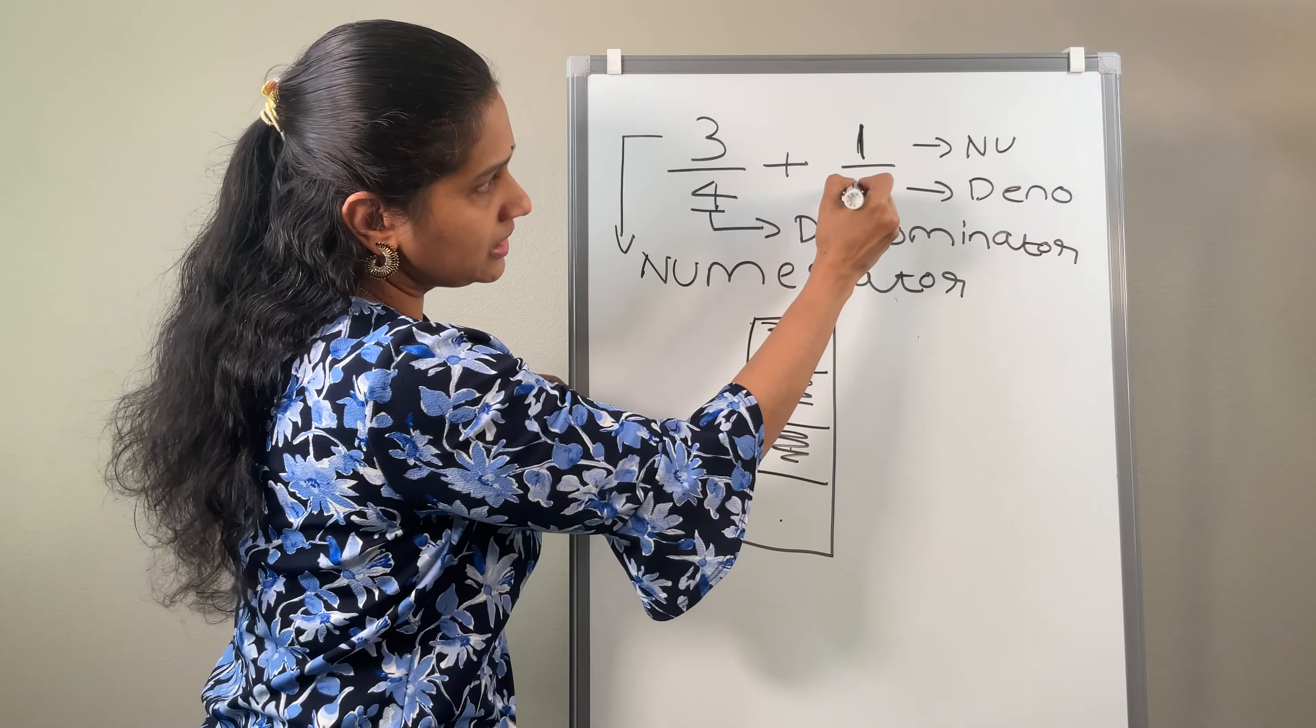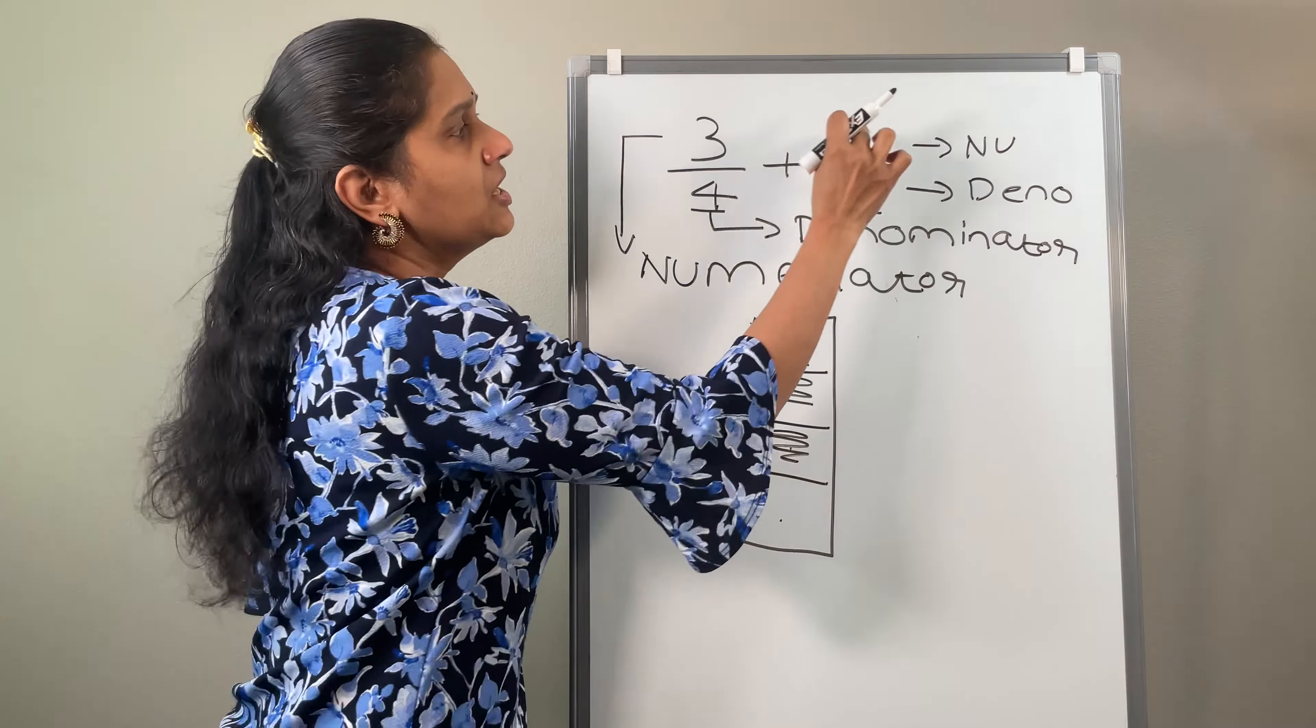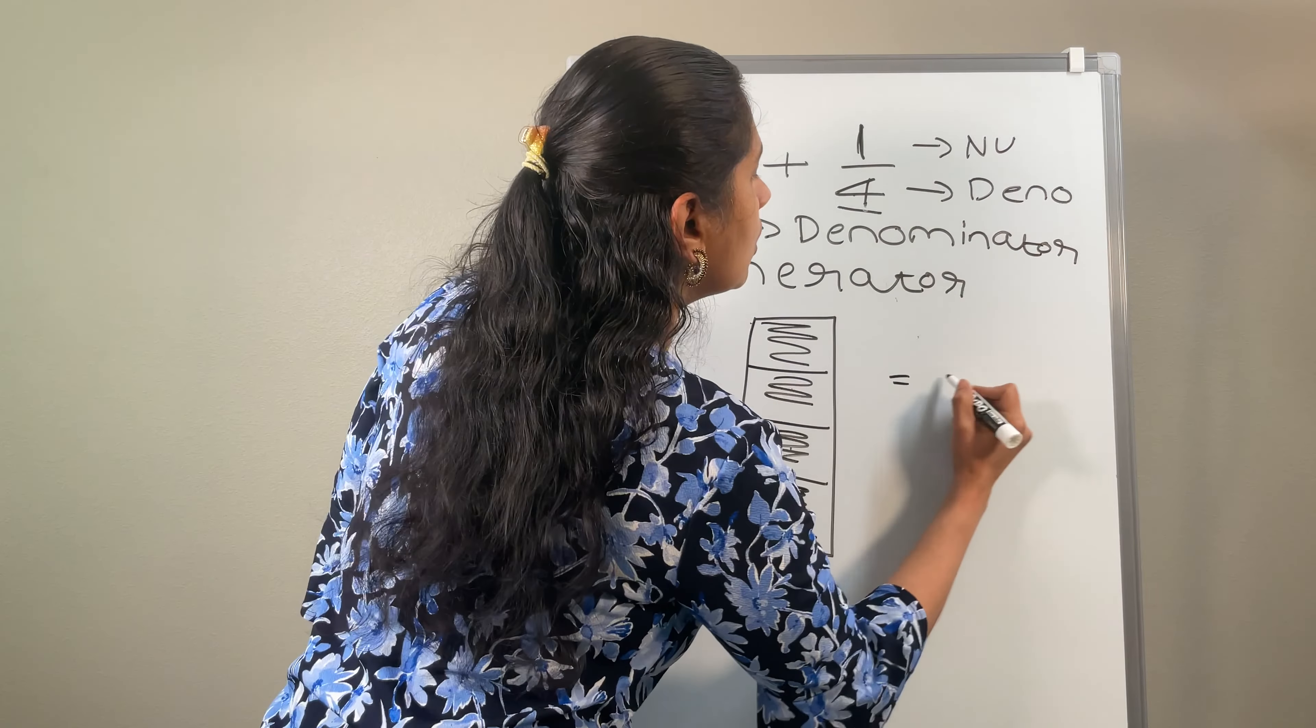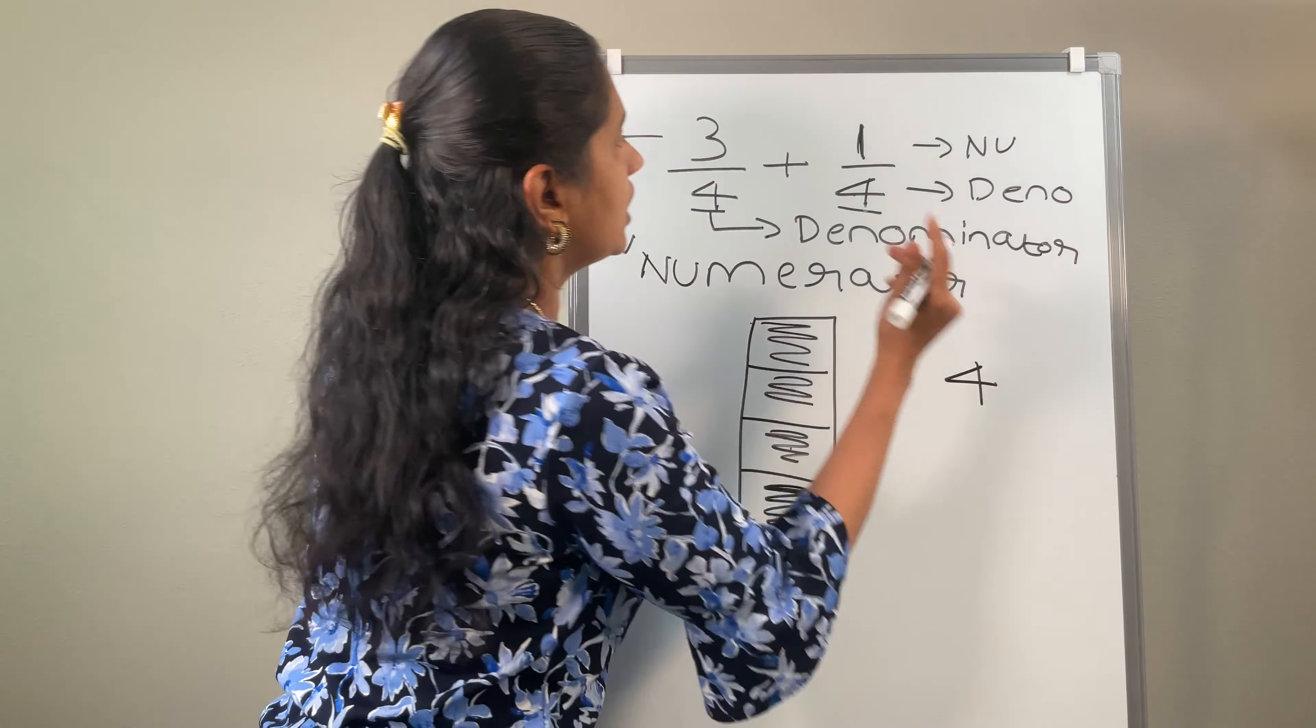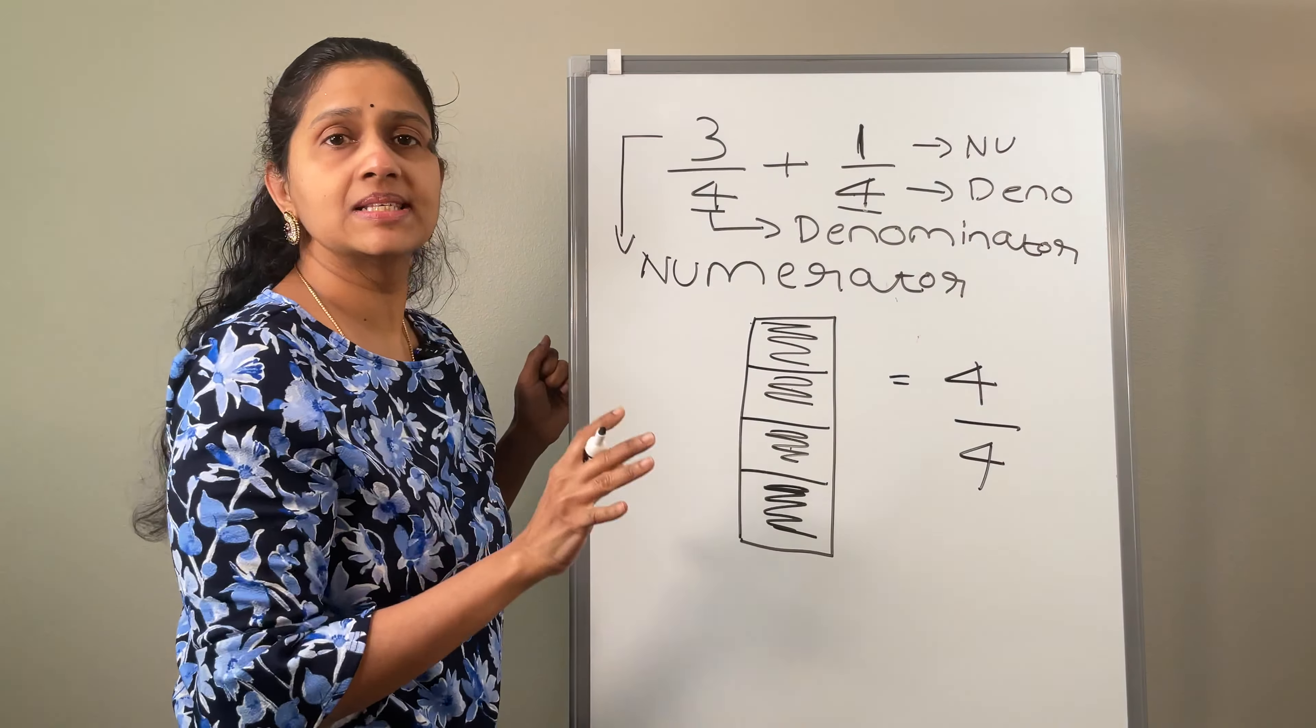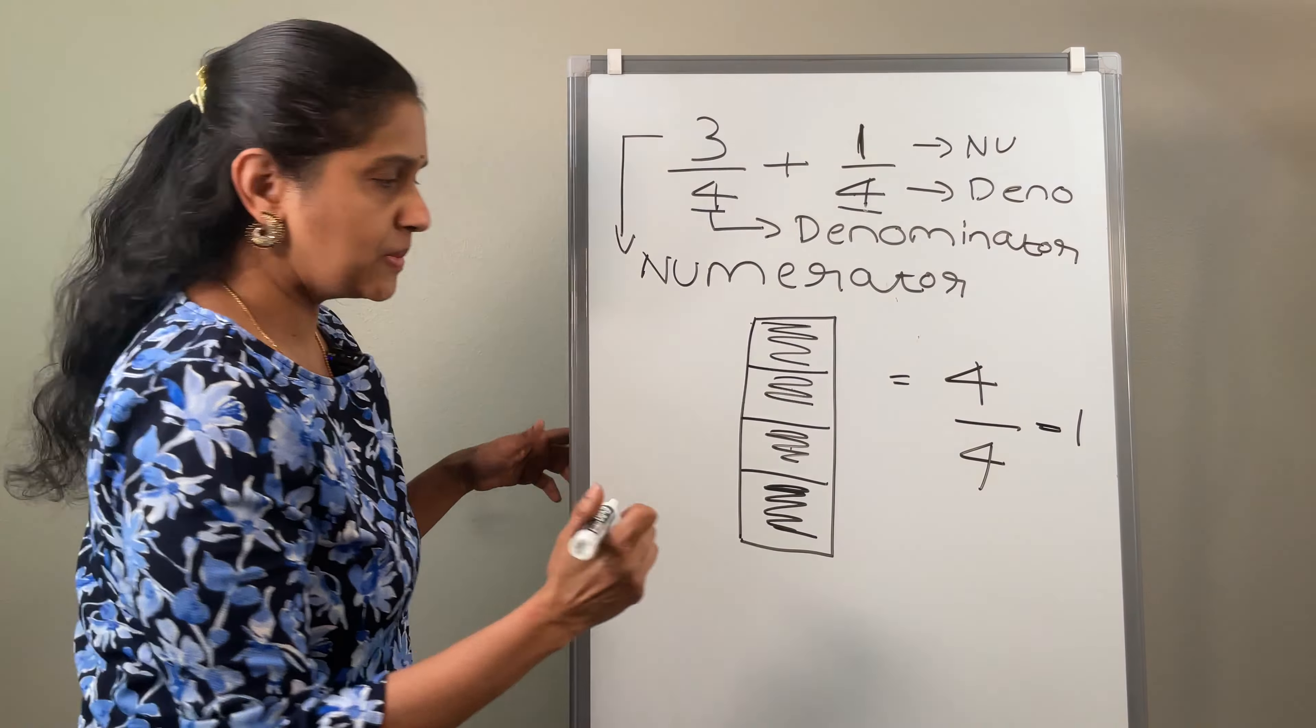4 are shaded among the other 4. That is, totally there is 4 in that 4 numbers are shaded. What is 4 by 4? It is equal to 1. Which means what?